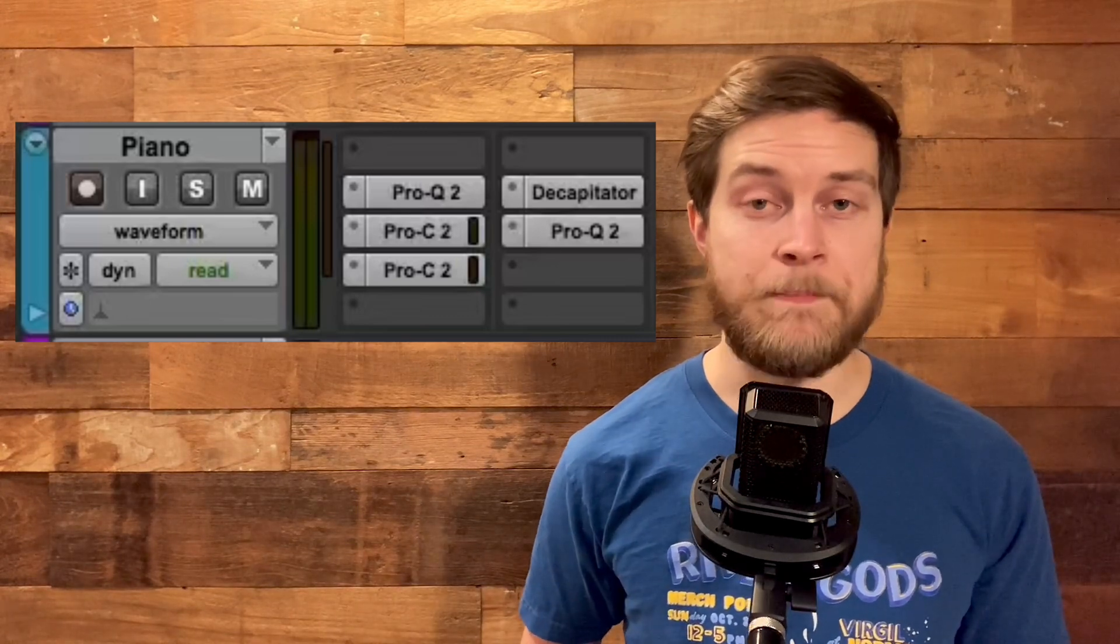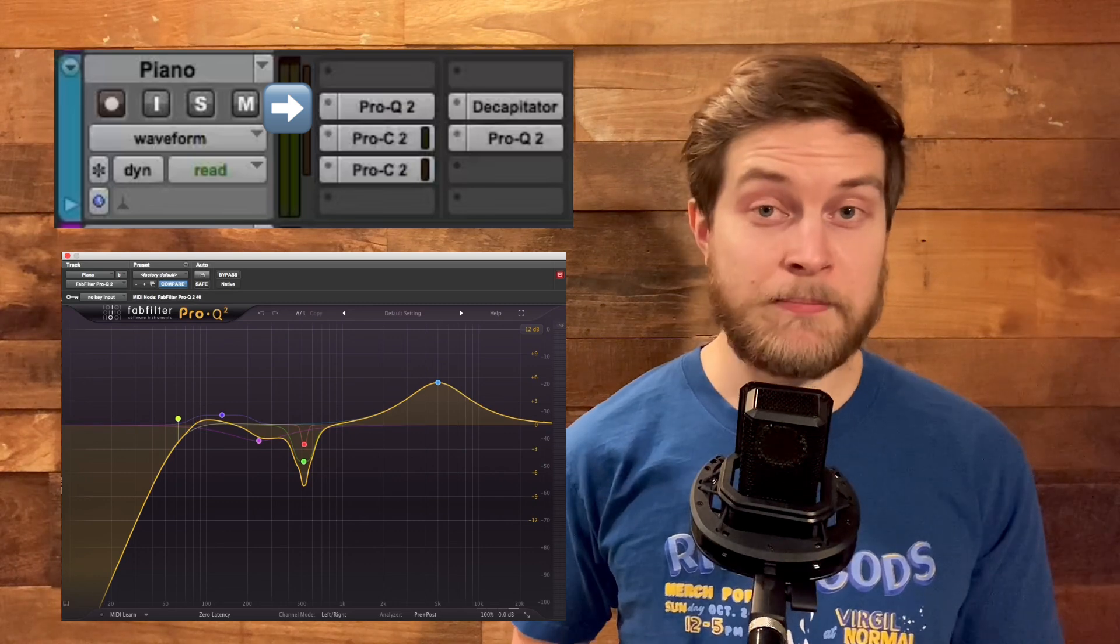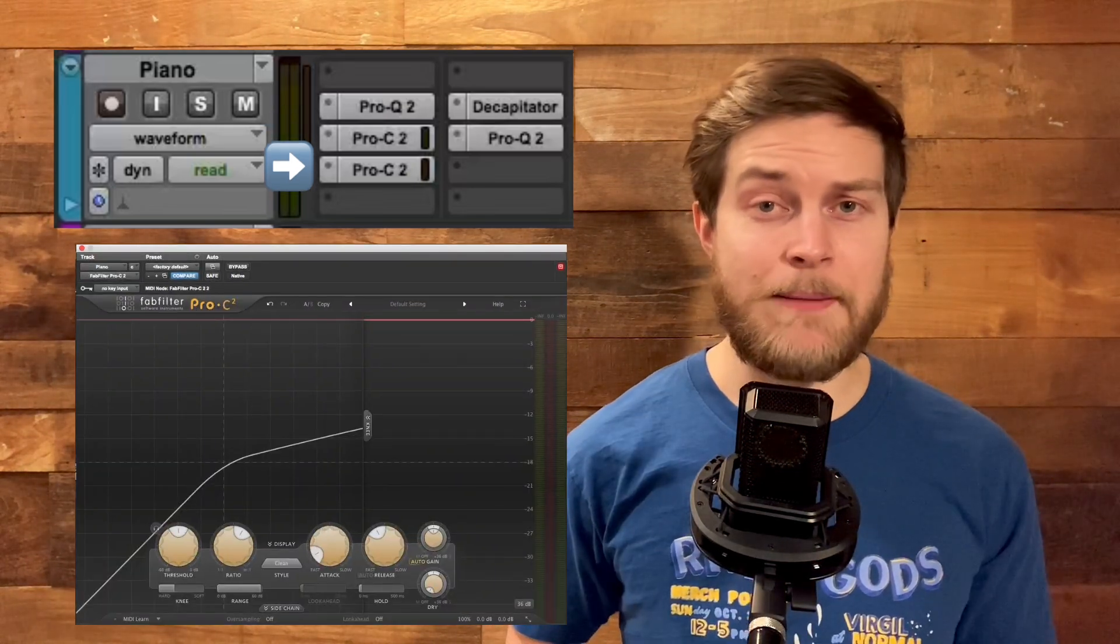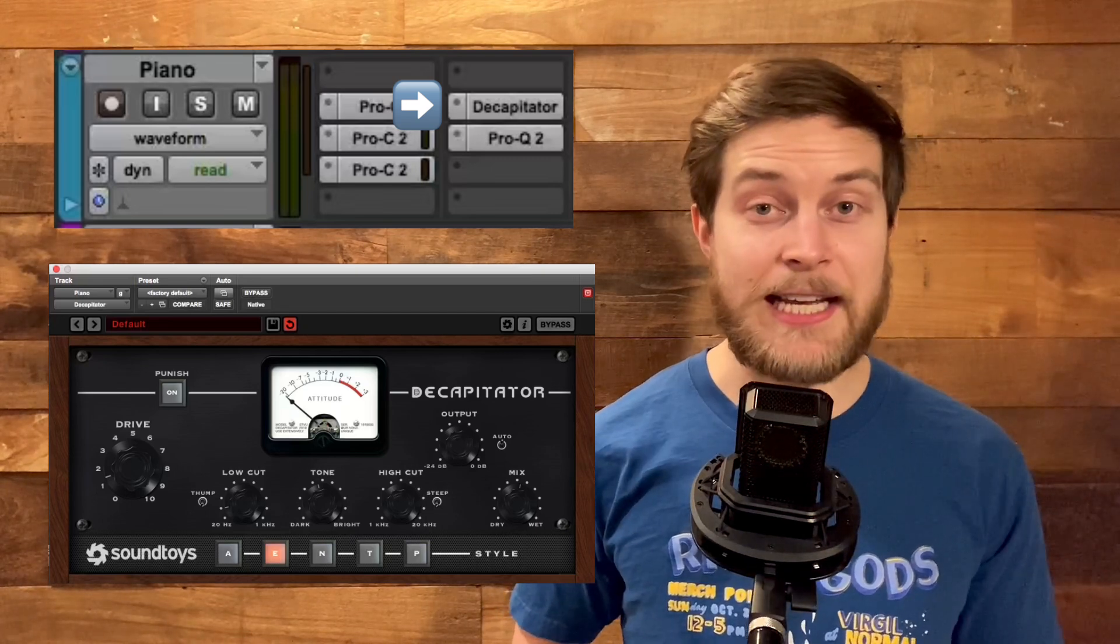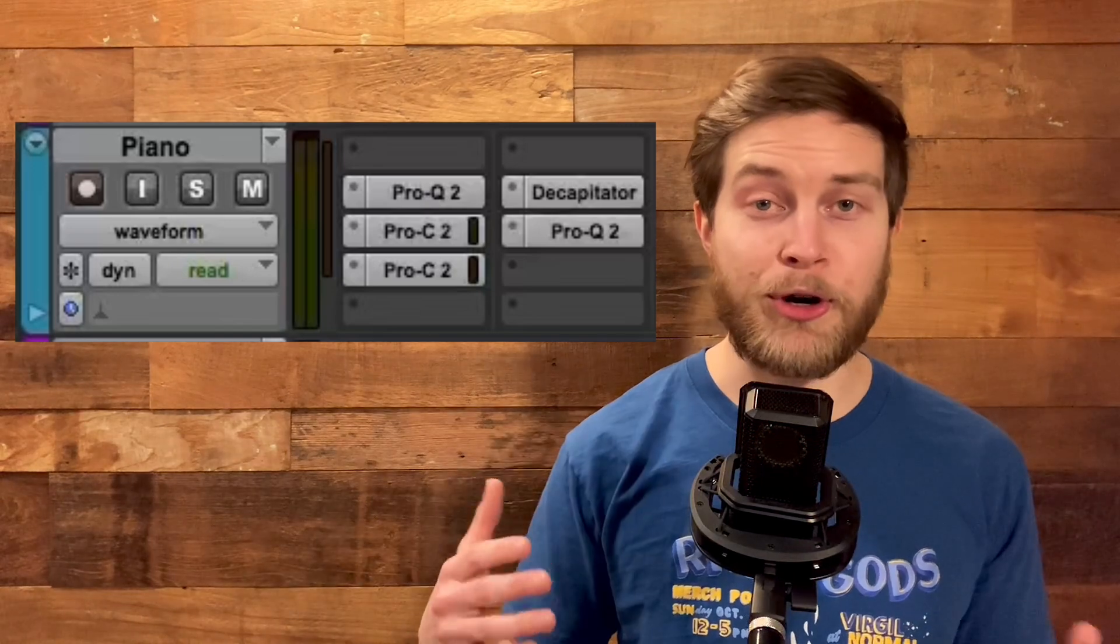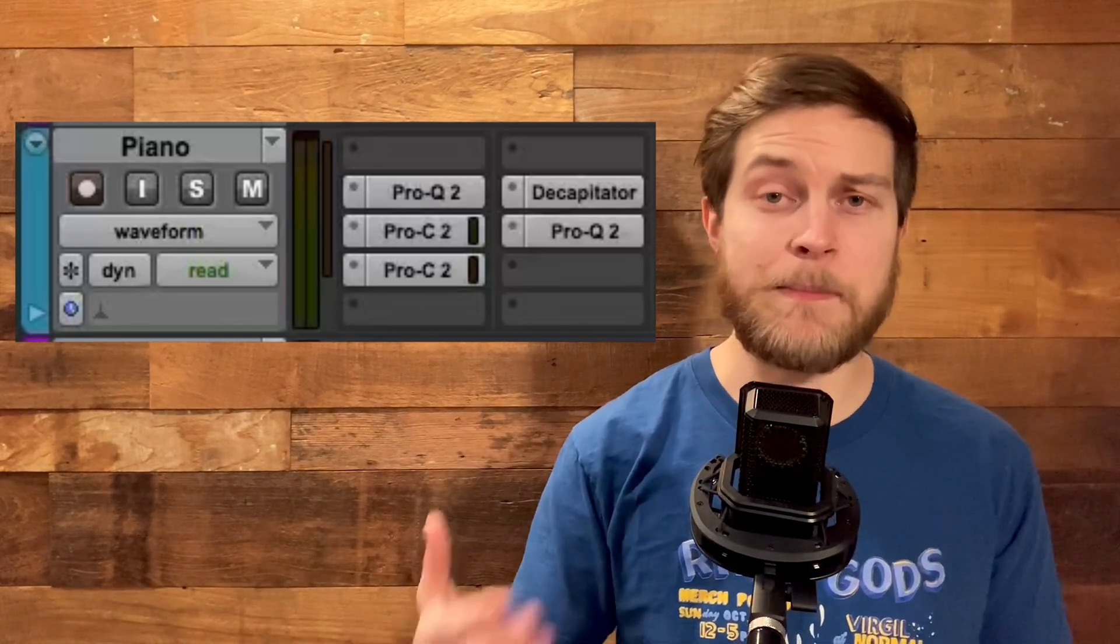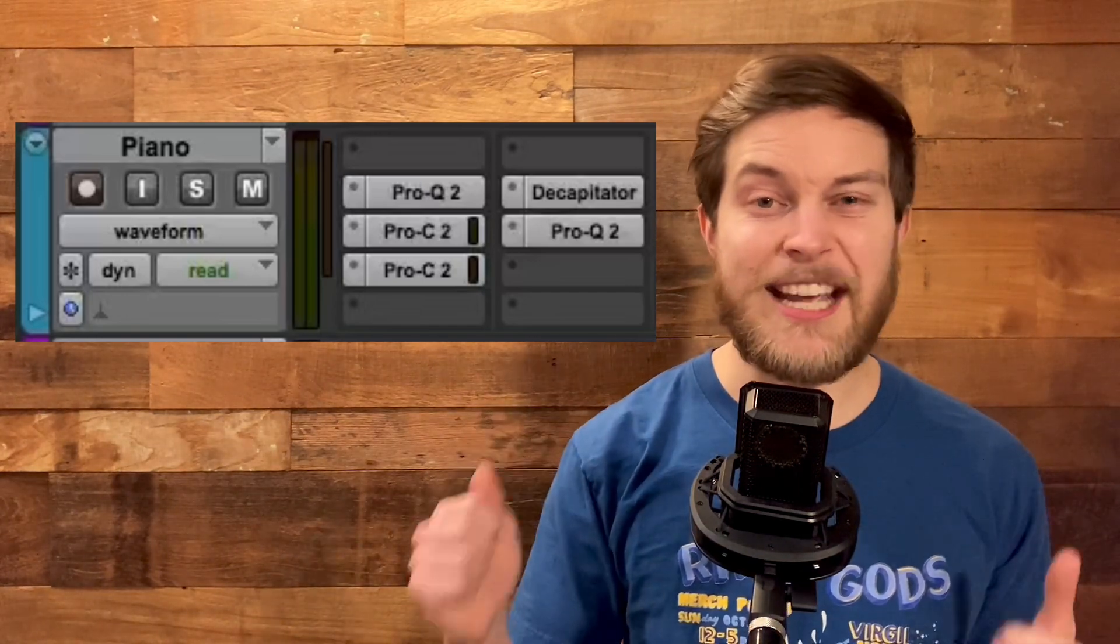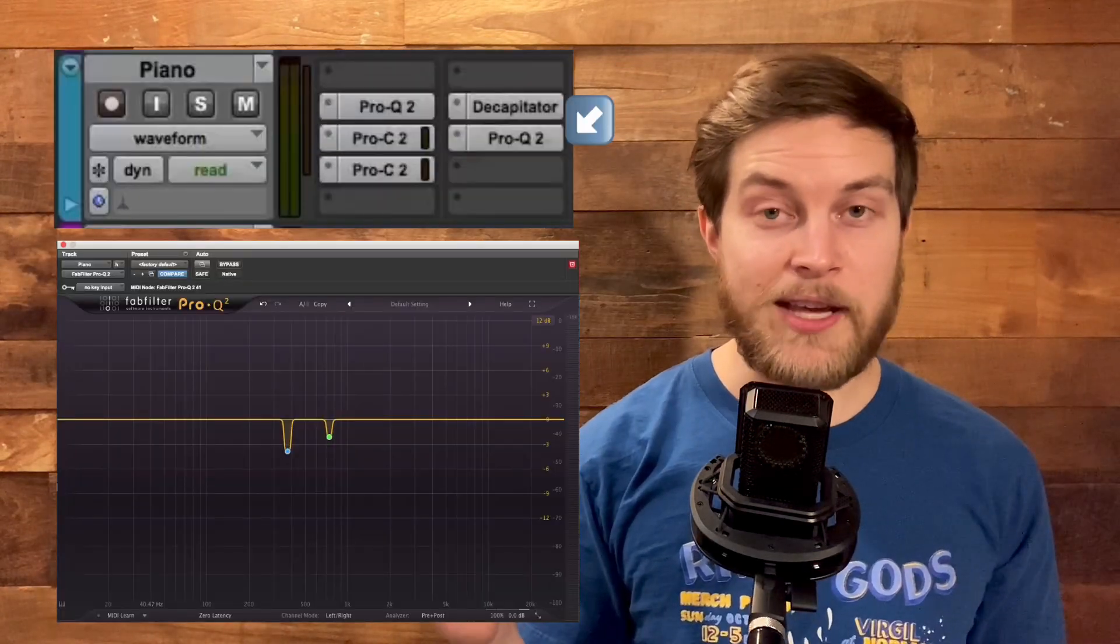The processing chain might look something like this: first it'll hit an EQ, then maybe a compressor, then maybe another compressor, then maybe some type of saturation or distortion, and then finally another EQ. The actual plugins, effects, and order obviously vary wildly depending on the instrument, the song, and what the track actually needs.